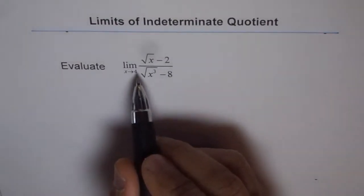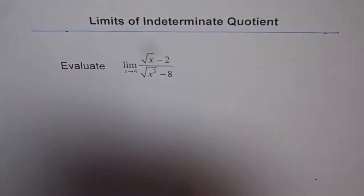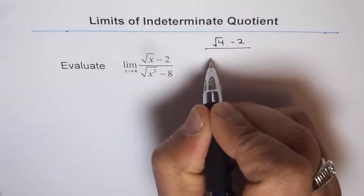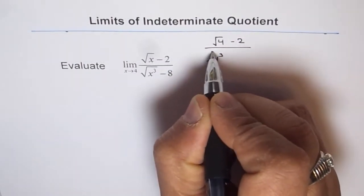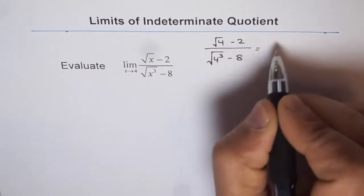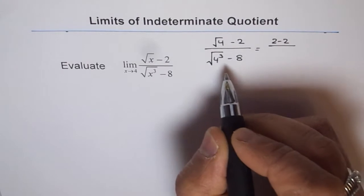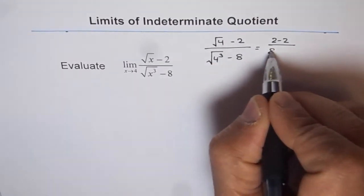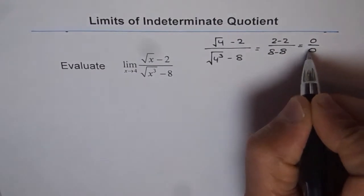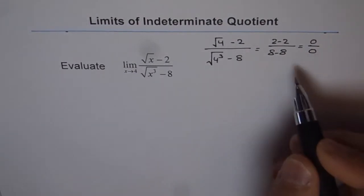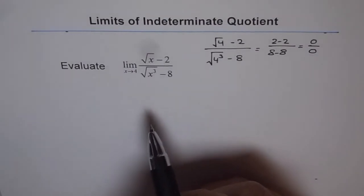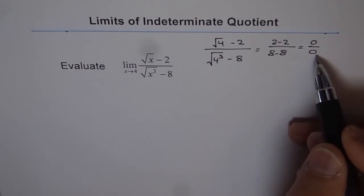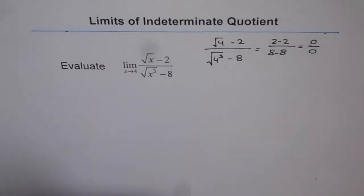Now as a first step, we'll substitute 4 for x and see what we get. So if I write 4 here, then I have square root of 4 minus 2 over square root of 4 cubed minus 8. Square root of 4 is 2, so I get 2 minus 2. 4 cubed is 64, and square root of 64 is 8, so we get 8 minus 8. That gives us 0 over 0 form. So what you notice here is that this is an indeterminate quotient form. We get 0 in the numerator and 0 in the denominator after substituting the limiting value in our function.